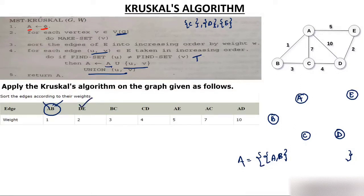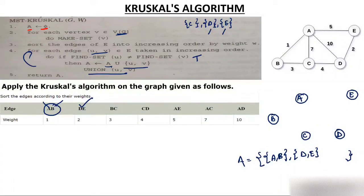Now select DE, because this is a loop — you keep selecting edges in increasing order. I have selected DE. Are D and E both in different sets? Yes. So add DE to set A and union them — D and E come together. DE has weight 2. I have selected AB (weight 1) and DE (weight 2) so far.